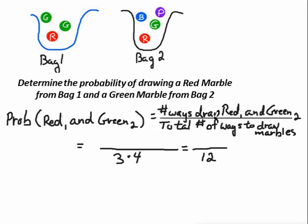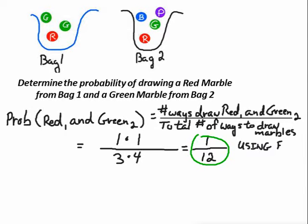How many ways can we draw out a red one? Using the fundamental counting principle, there's one red marble here, so one way to pick that out, times one way to pick it out from the other bag. So there's one way to pick out a red marble from bag one and a green marble from bag two. That's one over twelve — a one in twelve chance of picking a red from bag one and a green from bag two.